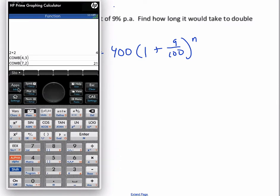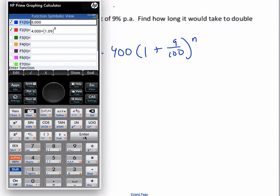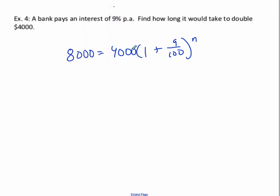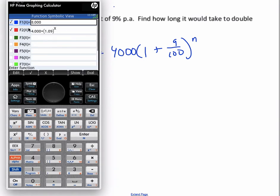So I can go to apps and the function app. And okay, I already have it typed in. You can type in 8000. And oh, this should be 4000 over here. You can type in 8000 as one function, the other function is this function right here.